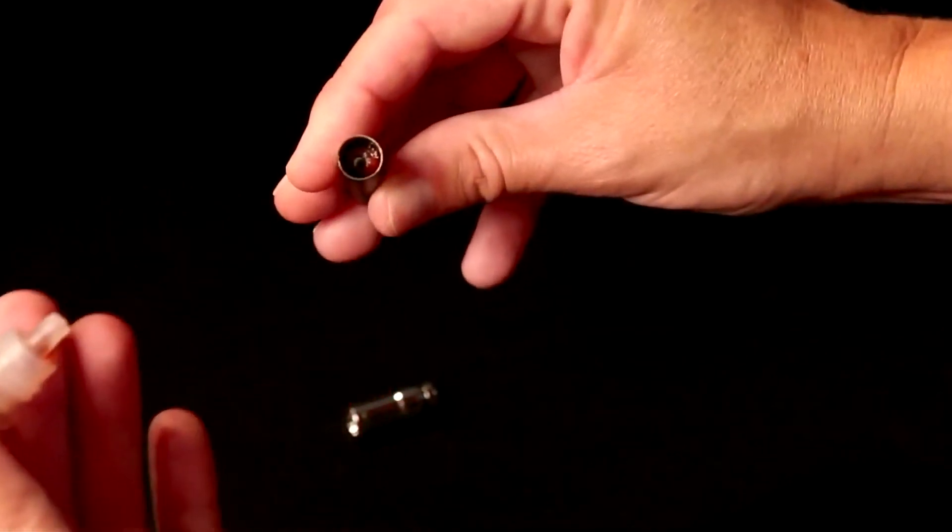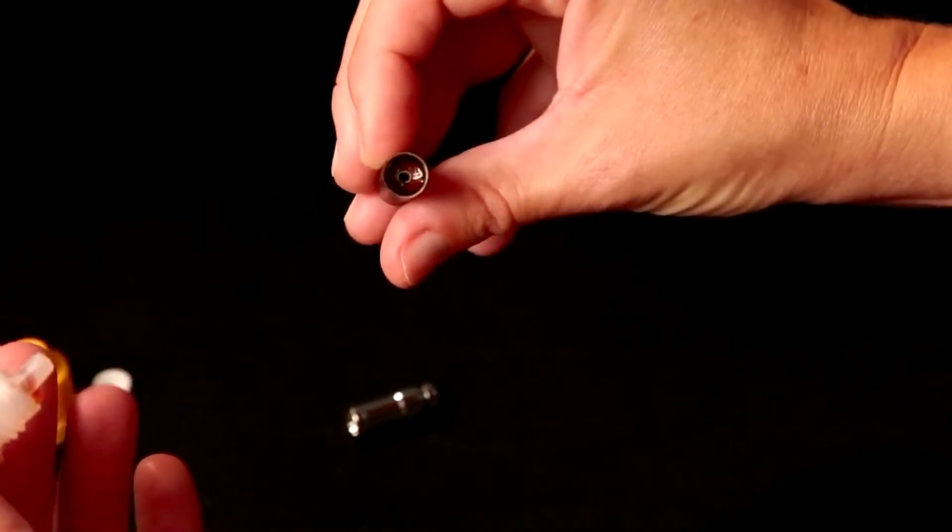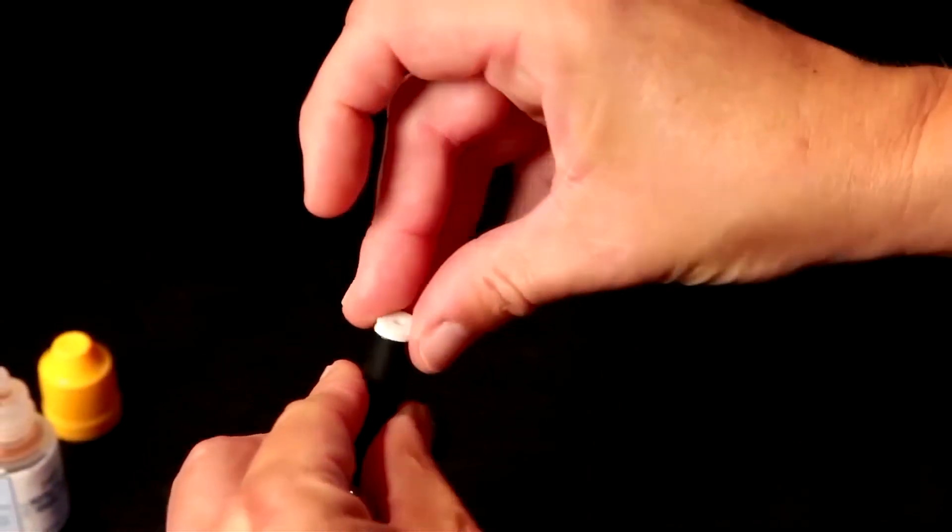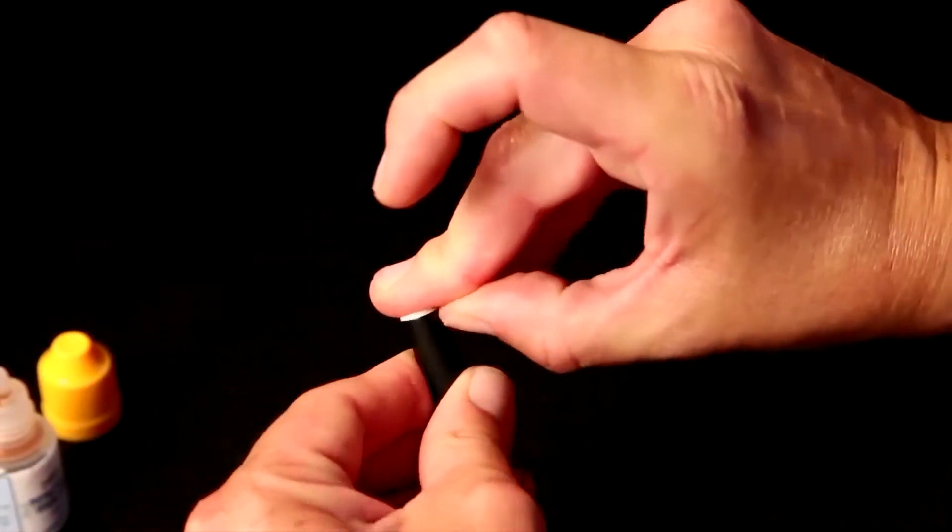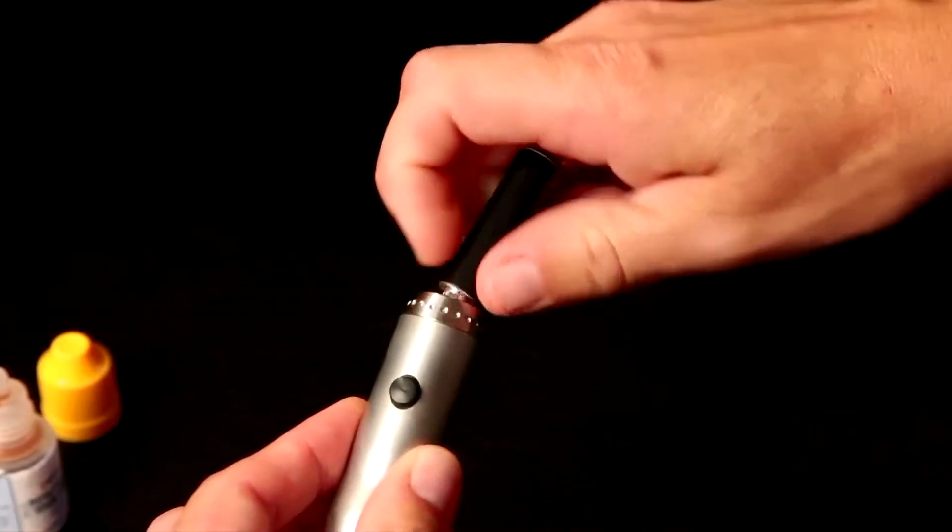When the liquid pools and is no longer absorbed, the cartomizer is full. Put the rubber cap back in place and screw the cartomizer onto the battery housing.